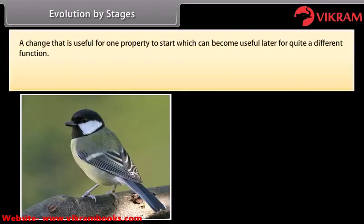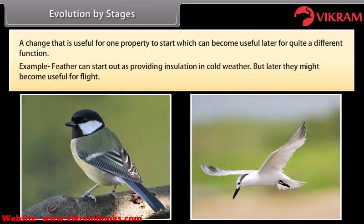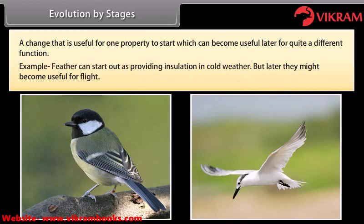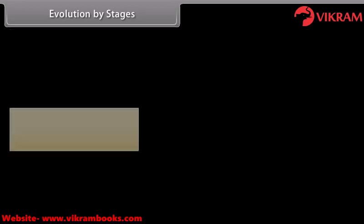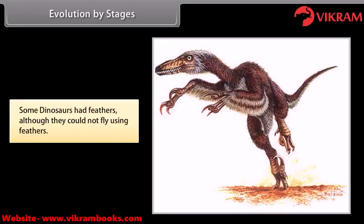Evolution by stages means a change that is useful for one property to start with can become useful later for quite a different function. For example, feathers may have started out as providing insulation in cold weather but later became useful for flight. Some dinosaurs had feathers although they could not yet use them for flying.